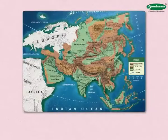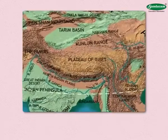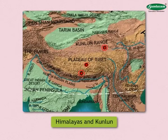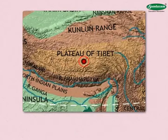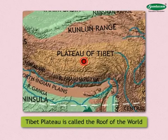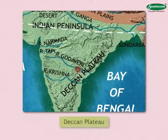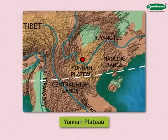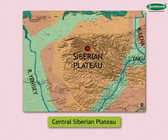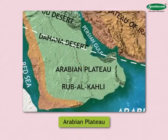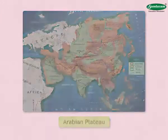Plateaus: There are vast plateaus between different mountain ranges. The Tibet Plateau lies between the Himalayas and Kunlun. As this plateau is the highest in the world, it is called the roof of the world. Besides this, the Deccan Plateau in the Indian subcontinent, the Yunnan Plateau in China, the Central Siberian Plateau in Russia, and the Arabian Plateau to the west are some of the main plateaus.